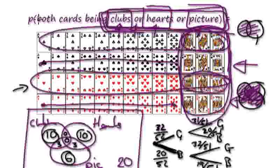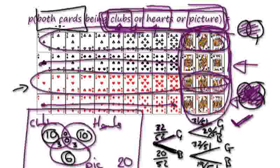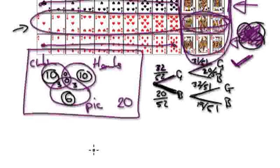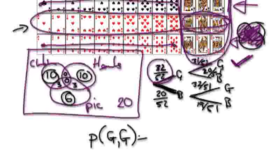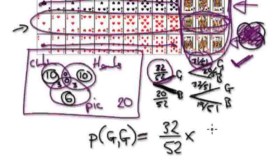Now, the initial question was both cards being clubs, hearts, or picture. So we want both cards to be good — there's only one branch we're interested in. If it said "at least one" there might be other branches, but because it says both cards, it has to be good and good. To answer the question, we need the probability of good and good.